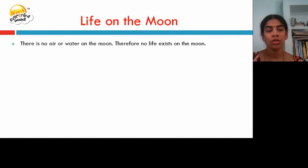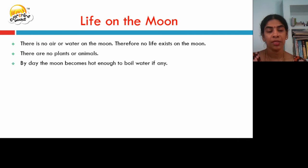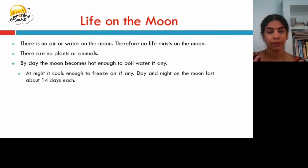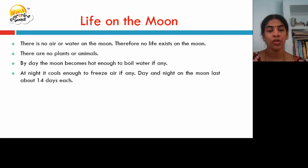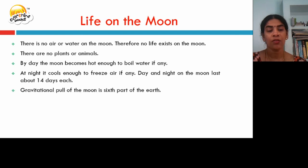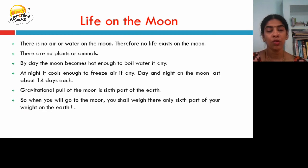There is no air or water on the moon, so life does not exist on the moon — there are no plants or animals. During the day, the moon becomes hot enough to boil water if any were present, and at night it cools enough to freeze air if any. Day and night on the moon each last about 14 days. The gravitational pull of the moon is one-sixth that of the earth, so when you go to the moon, you would weigh only one-sixth of your weight on earth.